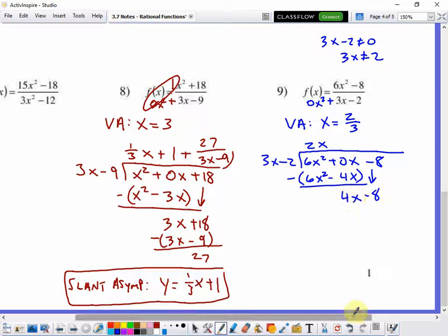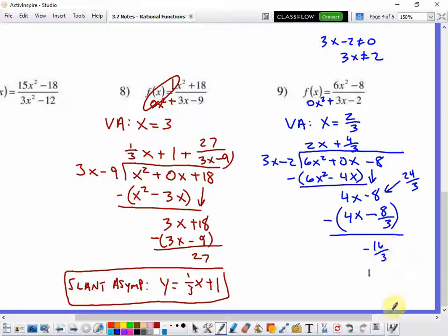4x divided by 3x is 4 thirds. So plus 4 over 3. When I distribute that 4 over 3 times 3x it gives me 4x. And 4 over 3 times negative 2 is negative 8 thirds. 4x minus 4x is 0. Negative 8 minus negative 8 thirds. Now 8 is the same as 24 over 3, so I've got negative 24 thirds minus negative 8 thirds. And that is negative 16 thirds. So that's my remainder.